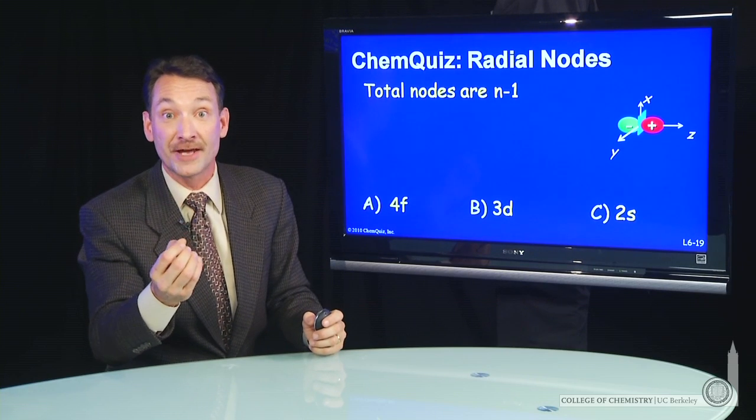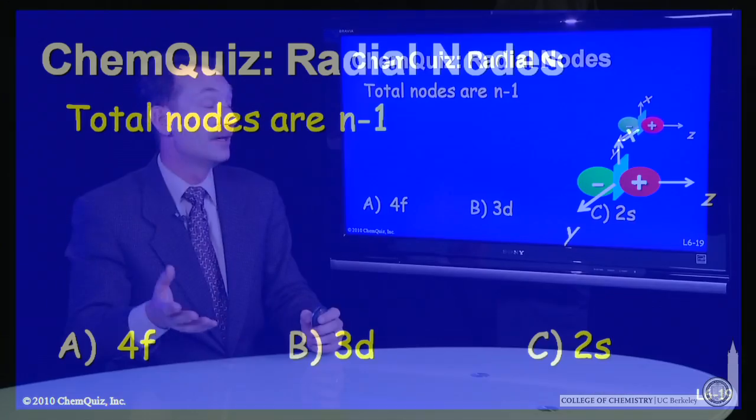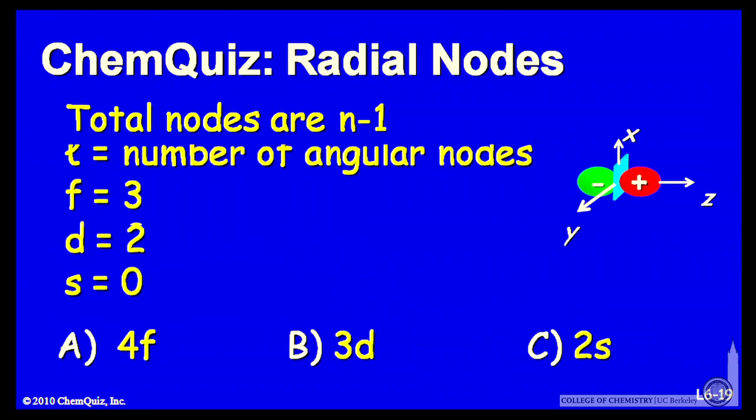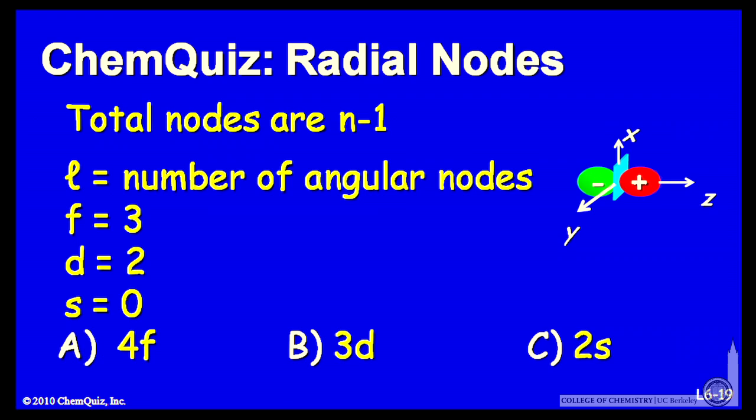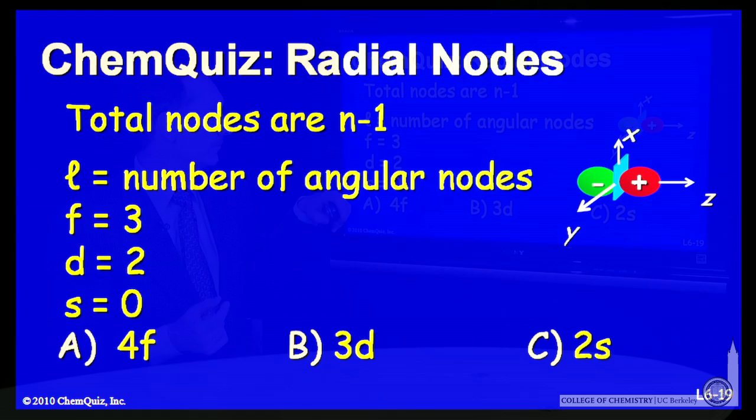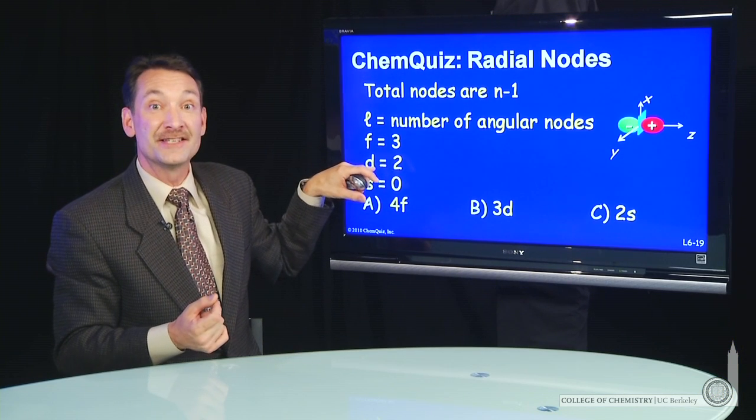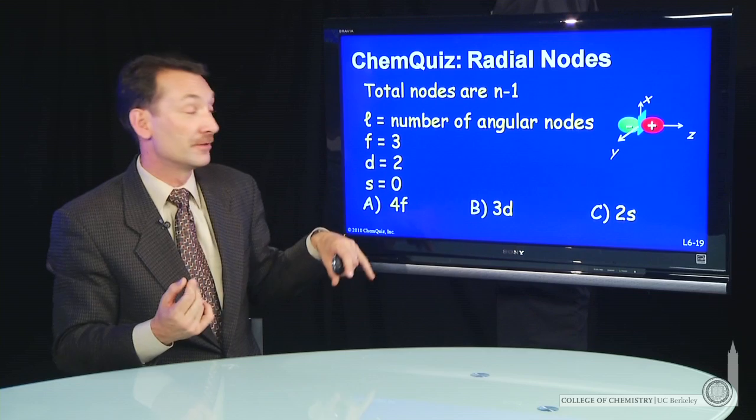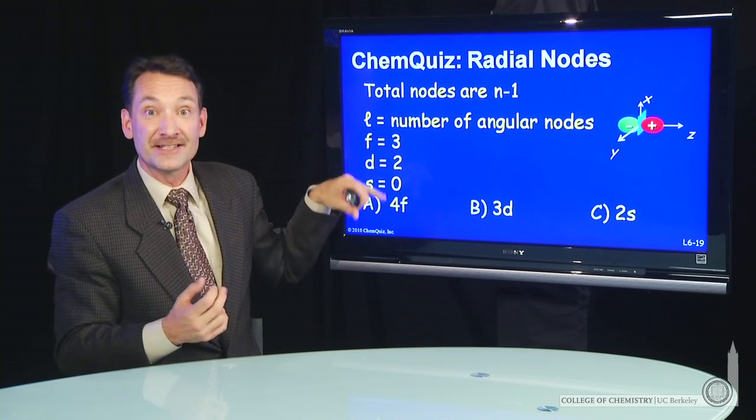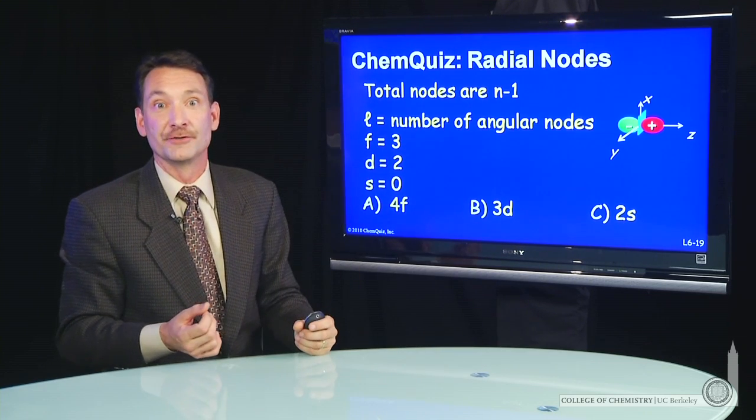What kind of nodes are they, radial or angular? Well, l tells us if they're angular or not. l is the total number of angular nodes. When l is 0, that's s, there are no angular nodes. When l is 2, that's d, there are two angular nodes. When l is 3, that's an f orbital, there are three angular nodes.